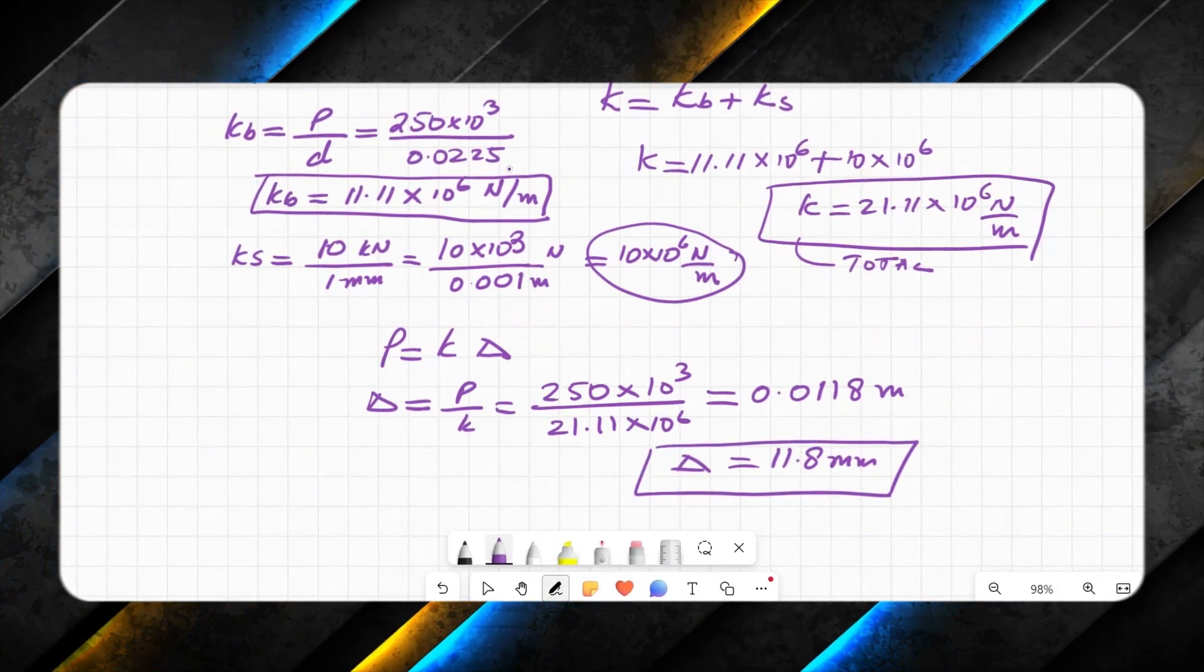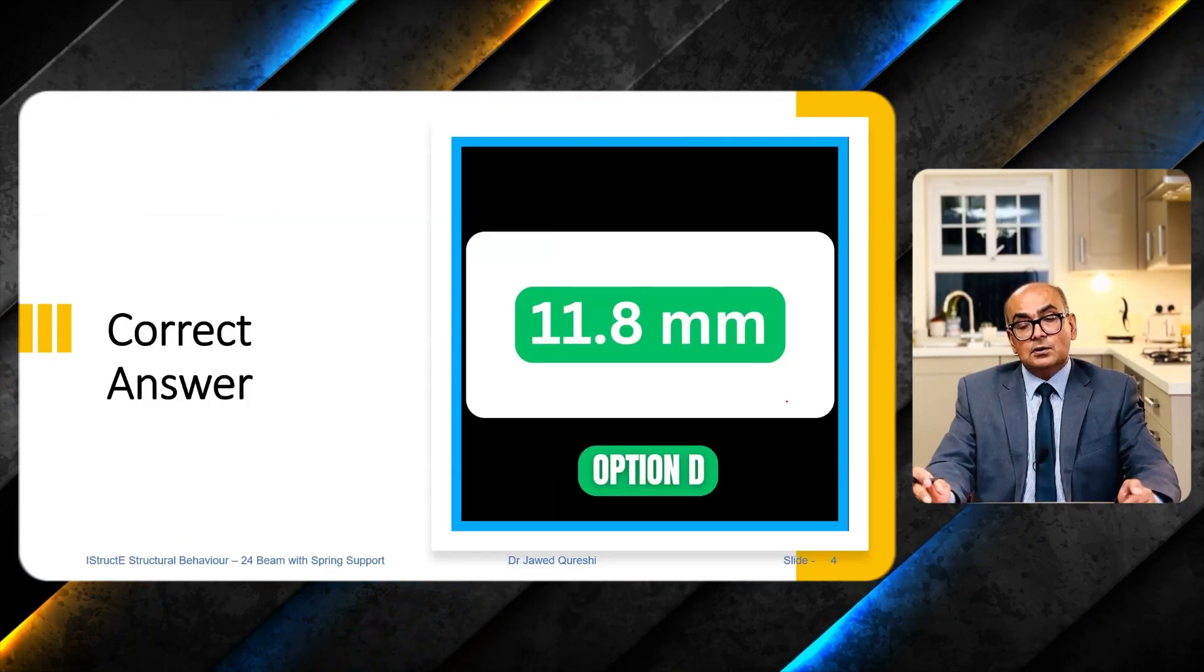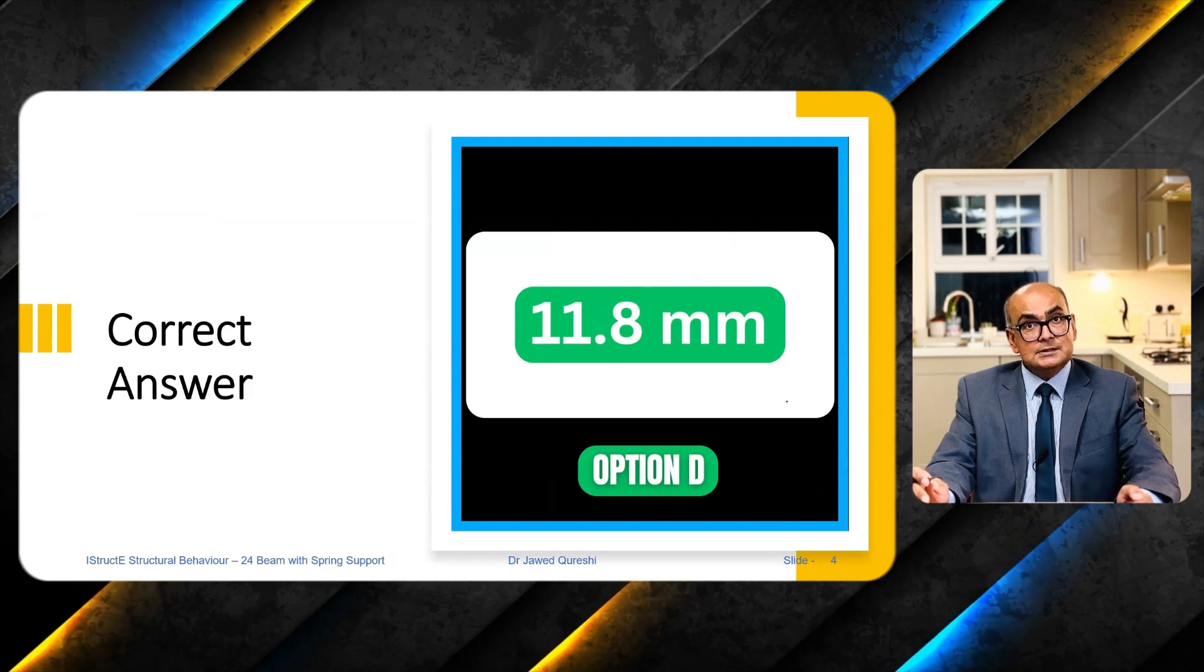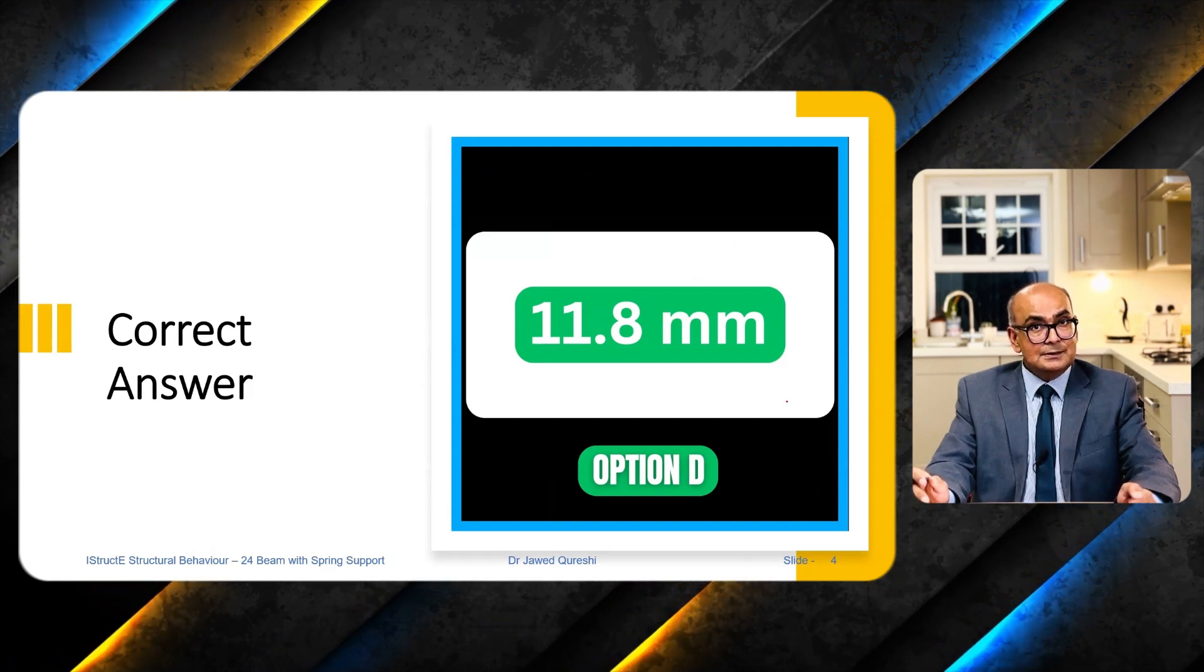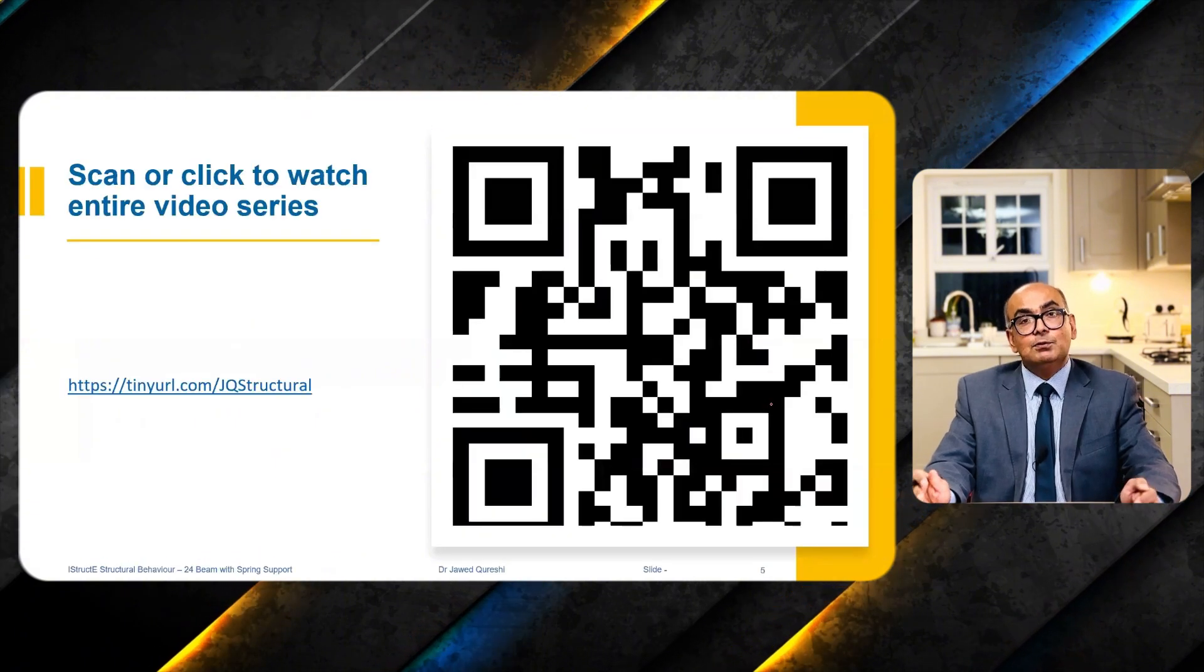So you can find out deflection by any of the methods, whichever you find convenient. So the correct answer is option D, 11.8 millimeter. Tell me, did you get it right? Don't worry if you didn't. You can always watch back this tutorial.